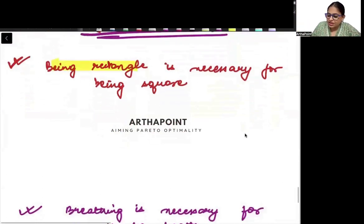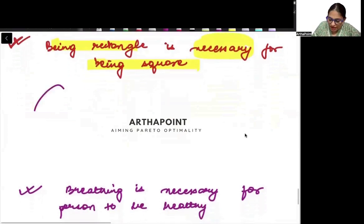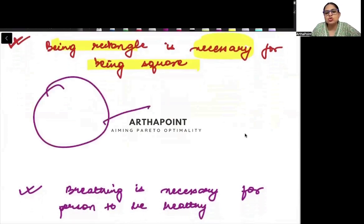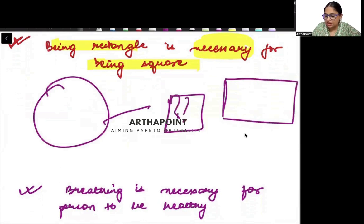Being rectangle is necessary for being square. Ab agar kuch rectangle hi nahi hai, suppose it's a circle, toh square kaise hoga? But agar kuch rectangle hai, toh chances hai na, ki 4 sides equal ho jayein, and it becomes a square. So rectangle is necessary, minimum cheez hai, for being a square.